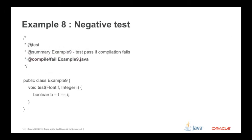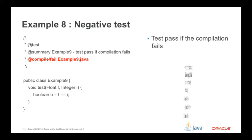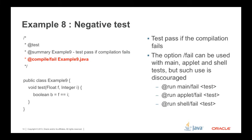Negative Test: '@compile /fail example9.java' means the compiler tries to compile example9.java and the test case is considered passed if compilation fails. Note that the '/fail' option can be used with the main, applet, and shell tests, but such use is discouraged.